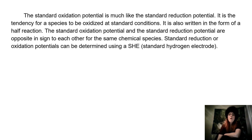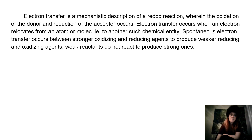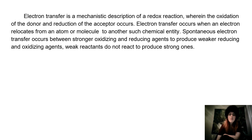Standard reduction or oxidation potentials can be determined using a standard hydrogen electrode. Electron transfer is a mechanistic description of a redox reaction, wherein the oxidation of the donor and reduction of the acceptor occurs. Electron transfer occurs when an electron relocates from an atom or molecule to another such chemical entity. Spontaneous electron transfer occurs between stronger oxidizing and reducing agents to produce weaker reducing and oxidizing agents. Weak reactants do not react to produce strong ones.